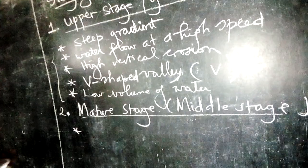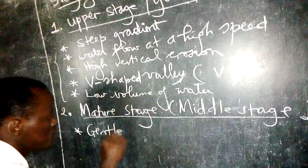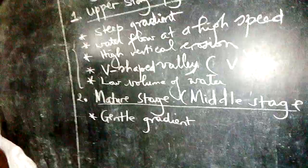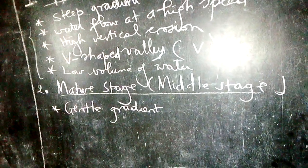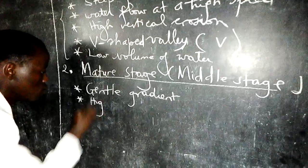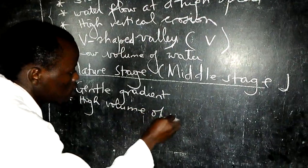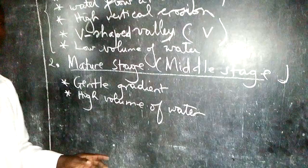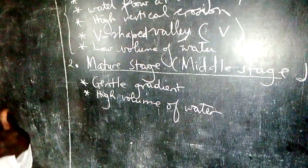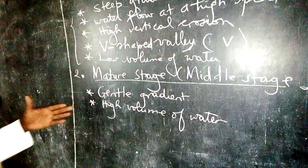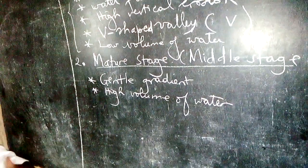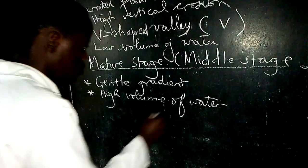At the mature stage, the gradient is not steep — it is gentle. Because we have a gentle gradient, the water moves at a low speed. We also have a high volume of water at this stage, because very many tributaries join the river. As more rivers join, the volume of water increases significantly.